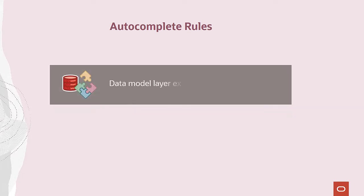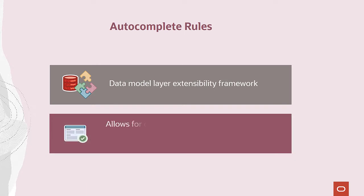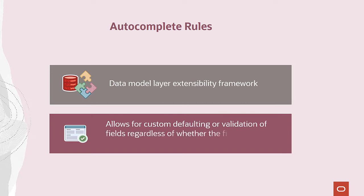Autocomplete Rules is a data model layer extensibility framework. It has no direct knowledge of the UI and is purely driven by the state of values in various fields of different objects. Autocomplete Rules, working on the data model layer of the application, allow for custom defaulting or validation of fields regardless of whether the fields actually appear in the user interface or not.